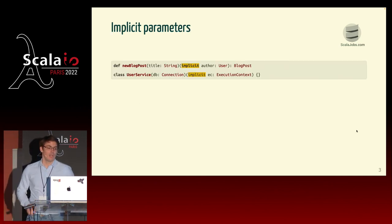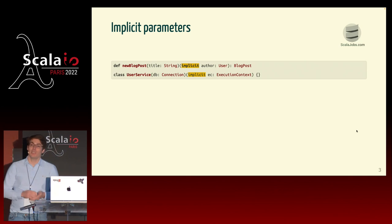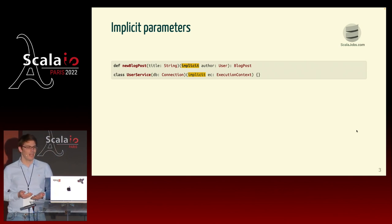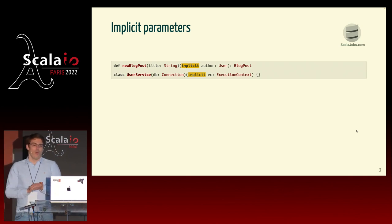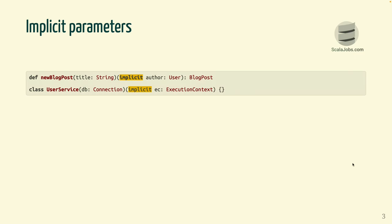So today I would like to talk about implicit parameters. Why do I want to talk about this? It's because implicit is probably one of the most scary features of the Scala programming language, and there are a few reasons why implicits are so scary.